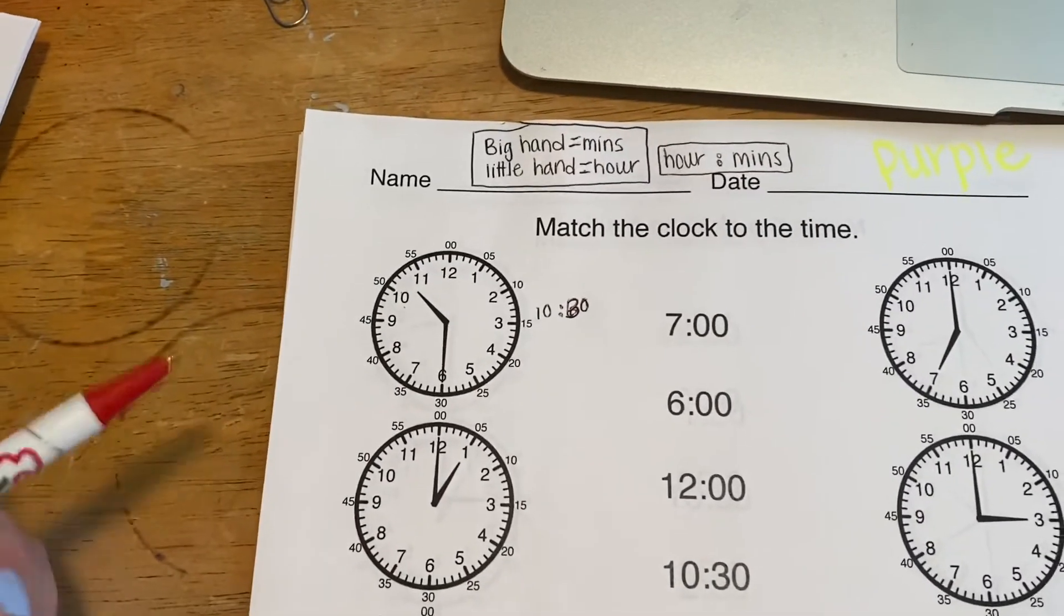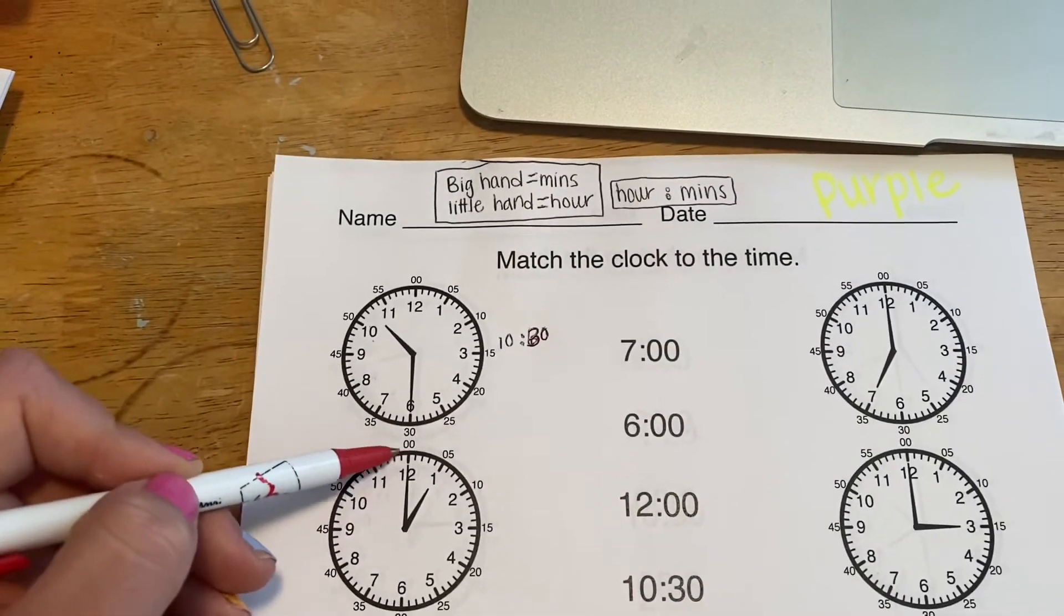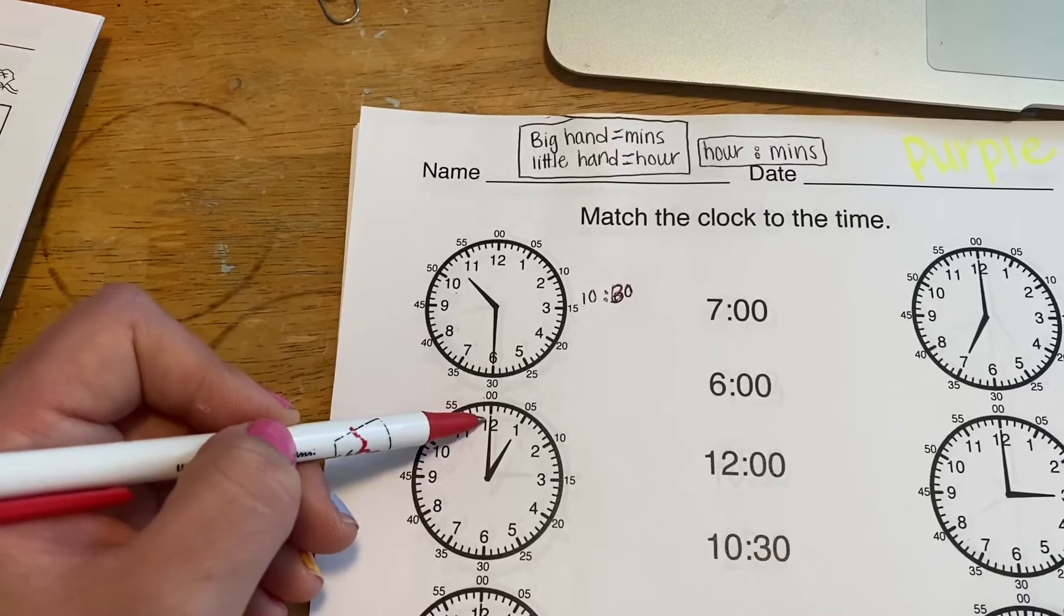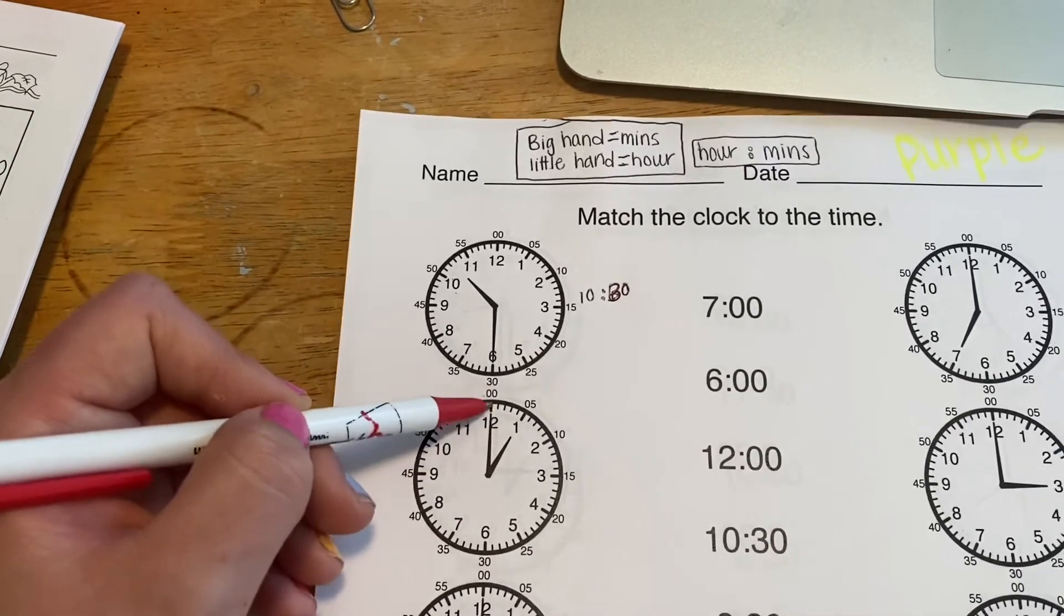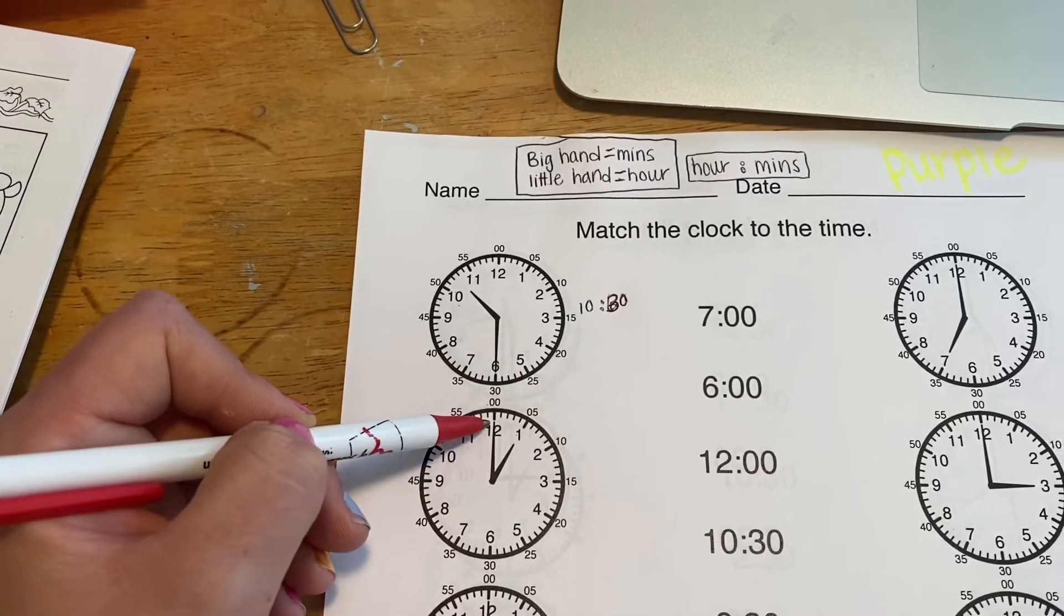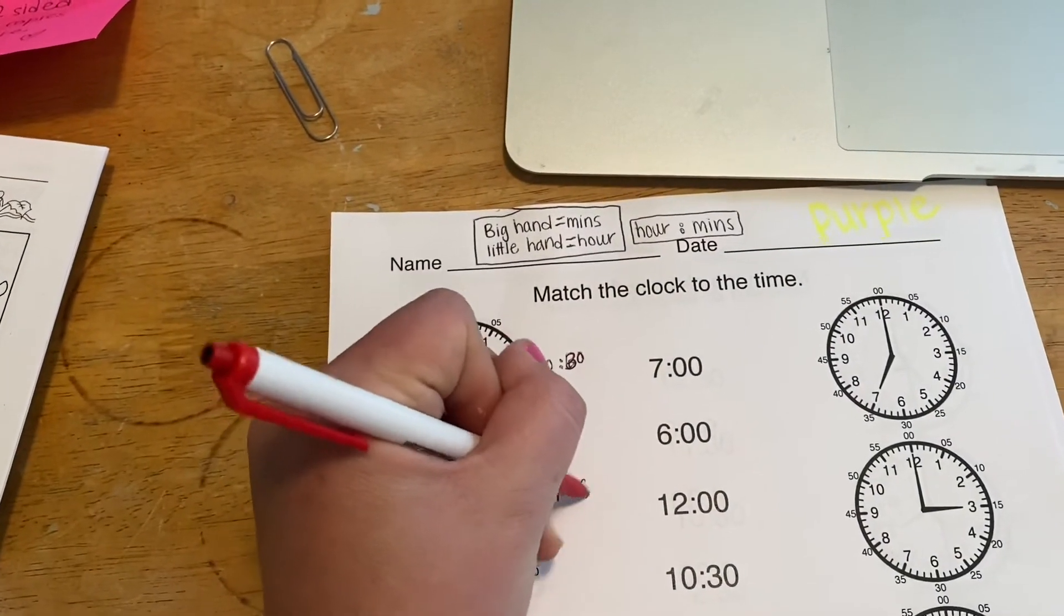So I want you to go through that whole thing. When you're looking at the big hand, look for the number up top. So this one, the big hand's pointing to the 12, but it's minutes, so it's at the zeros. So it's 1:00. One is the hour, the minutes are zero zero.